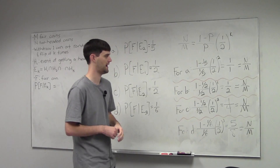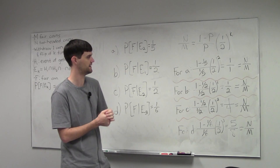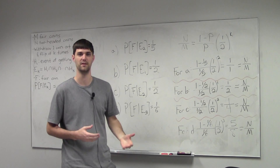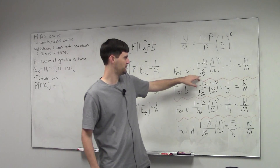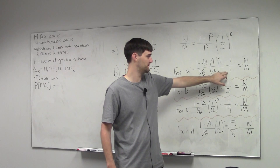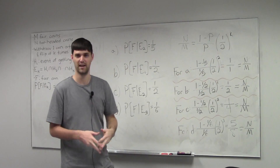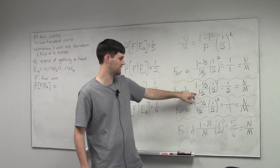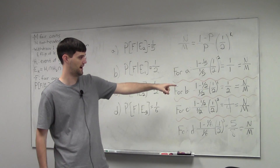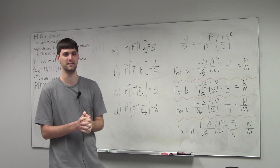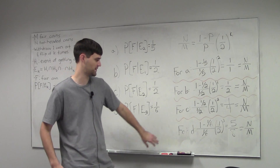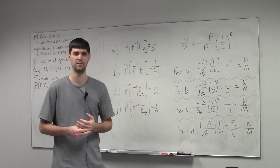For irreducible fractions, once we plug into the expression, we just make sure the numerator and denominator are coprime. For part A, one minus one-fifth over one-fifth times one-half squared comes out to one, so the ratio is one over one — one fair coin and one unfair coin. For part B, we get one-half, so one unfair coin and two fair coins. For part C, we end up with one-fourth — one unfair coin and four fair coins. For part D, we end up with five-eighths — five unfair coins and eight fair coins.